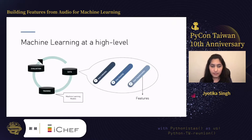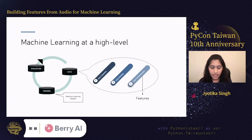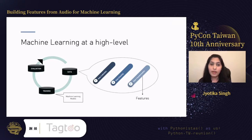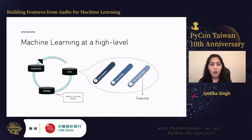Machine learning at a high level has three main phases. There is a data phase consisting of data collection — sometimes data exists at a company, sometimes we scrape it or use openly available datasets. Then there is data cleaning, since data is often not in the cleanest format. Data transformation converts your data from raw format to numerical format, called features, which are used as input for training machine learning models. Testing and evaluation further inform data decisions.